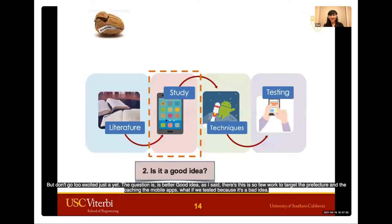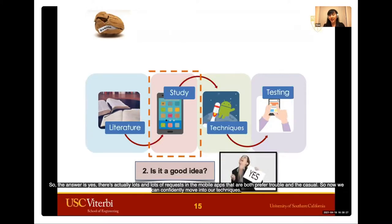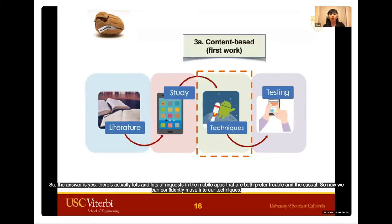But don't get too excited just yet. The question is: is prefetching and caching even a good idea for mobile apps? There's so little work targeting this area — what if that's because it's a bad idea? So I first did an empirical study on a large number of real mobile apps to figure out whether there's an opportunity for prefetching and caching. The answer is yes — there are lots of requests in mobile apps that are both prefetchable and cacheable. So we can confidently move to our techniques.